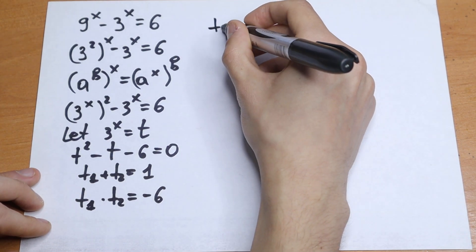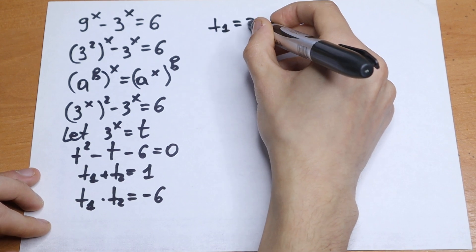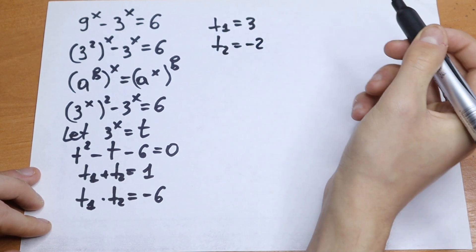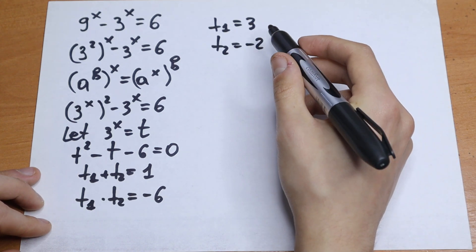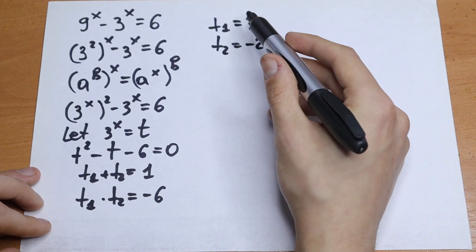So we will have t1 equals 3 and t2 equals minus 2. We have two roots and let's solve two equations.